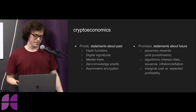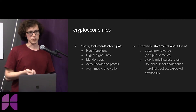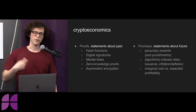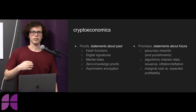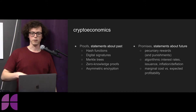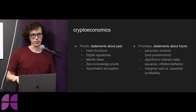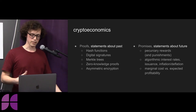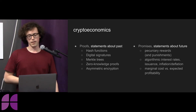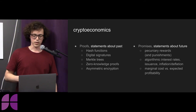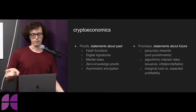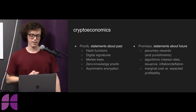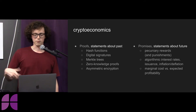The other half would be promises — statements about the future. An example would be an IOU: if I want to loan you five dollars today, I can get back an IOU that says you'll pay me back five dollars with some interest in the future. Examples we see in crypto would be rewards like monetary rewards, also punishments, algorithmic ideas around interest rates, issuance of a currency, inflation or deflation rates, and this idea of marginal cost versus expected profitability.